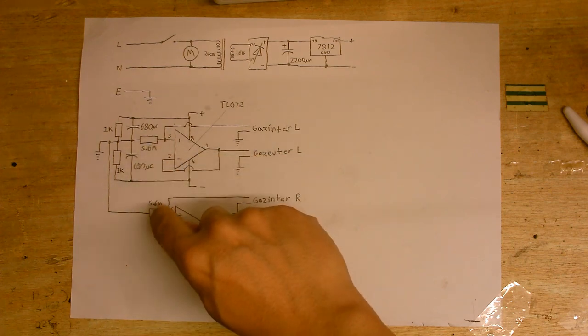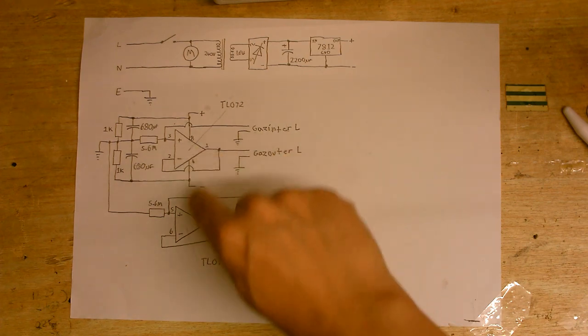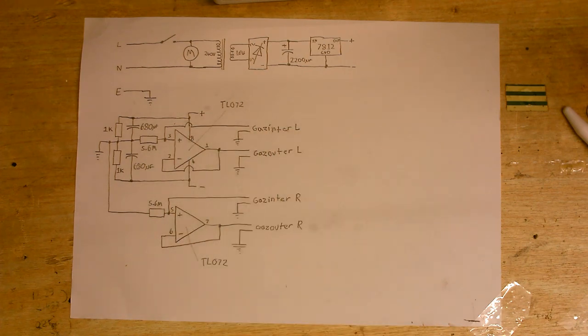It's just going to reinforce whatever's coming out of the cartridge. So whatever voltage goes in here is going to come out here, but with a lot more current behind it. Also, I've chosen 5.6 megohms as our input impedance, which shouldn't load down the cartridge. And I've chosen TL072 op-amps because they have an almost unlimited input impedance. So that's enough waffle, let's see if this works.